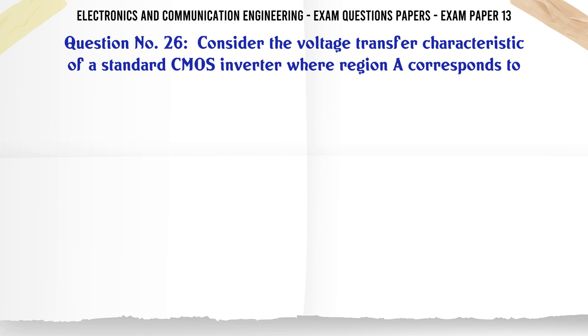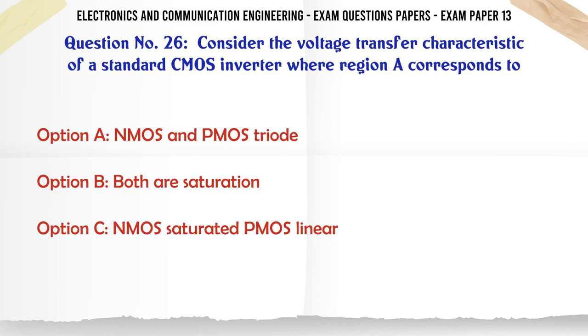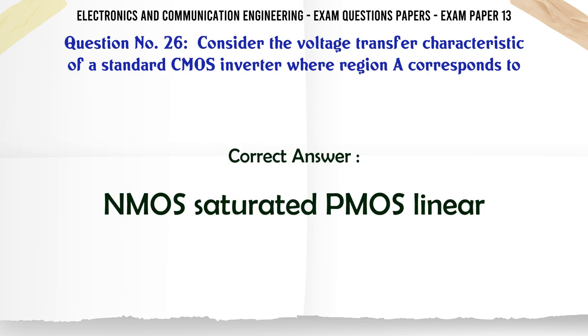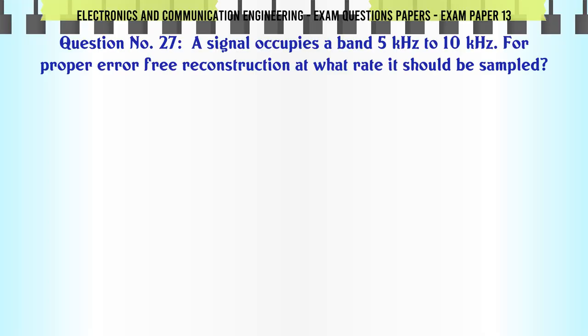Consider the voltage transfer characteristic of a standard MOS inverter where region A corresponds to: A: NMOS and PMOS triode, B: Both are saturation, C: NMOS saturated PMOS linear, D: None of these. The correct answer is NMOS saturated PMOS linear.